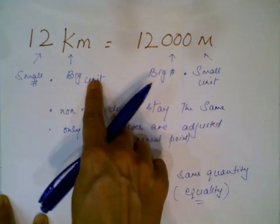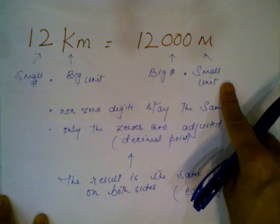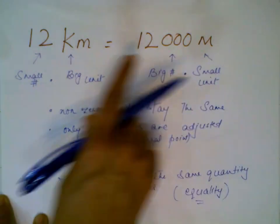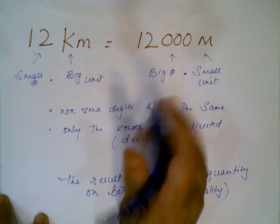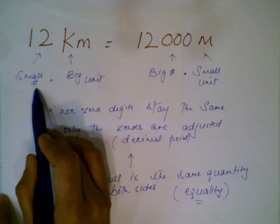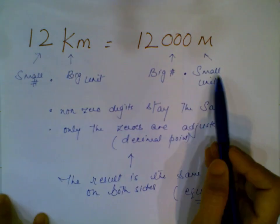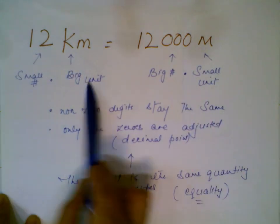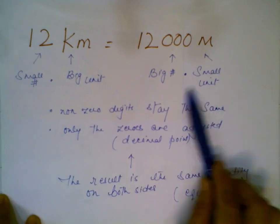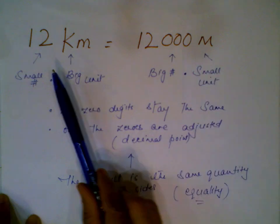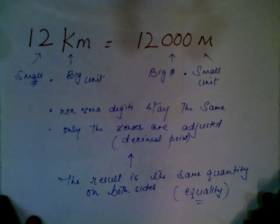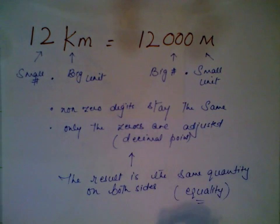Kilometers is a big unit and meters is a small unit. We are working with equality — we want the same quantity on both sides. A big unit needs a small number, and a small unit needs a big number. When you multiply, the non-zero digits stay the same; only the zeros are adjusted by moving the decimal.